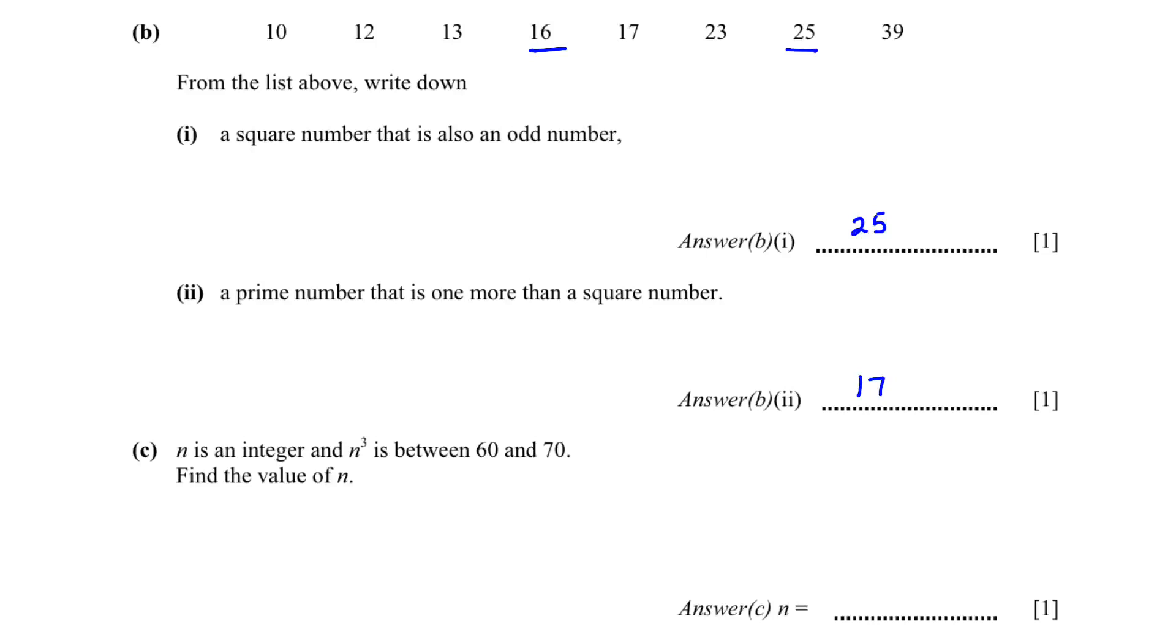n is an integer and n cube is between 60 and 70. Find the value of n. The cube number between 60 and 70 is 4 cube is equal to 64. So what is our n? Our n is 4.